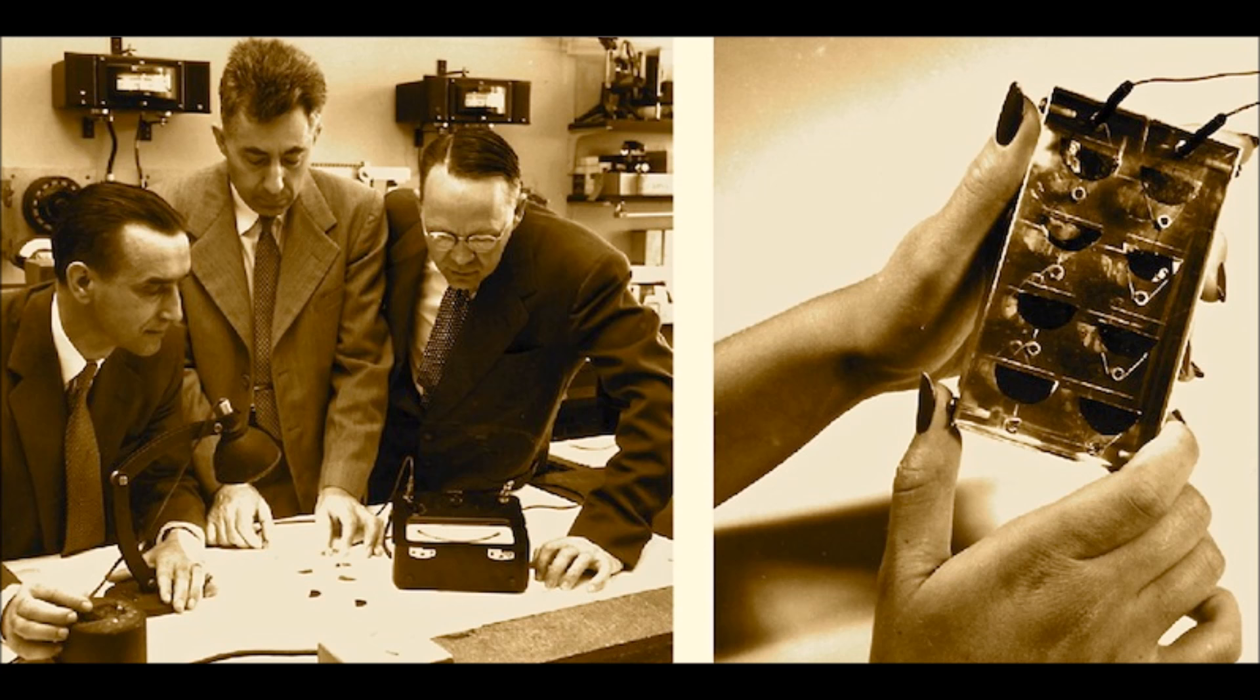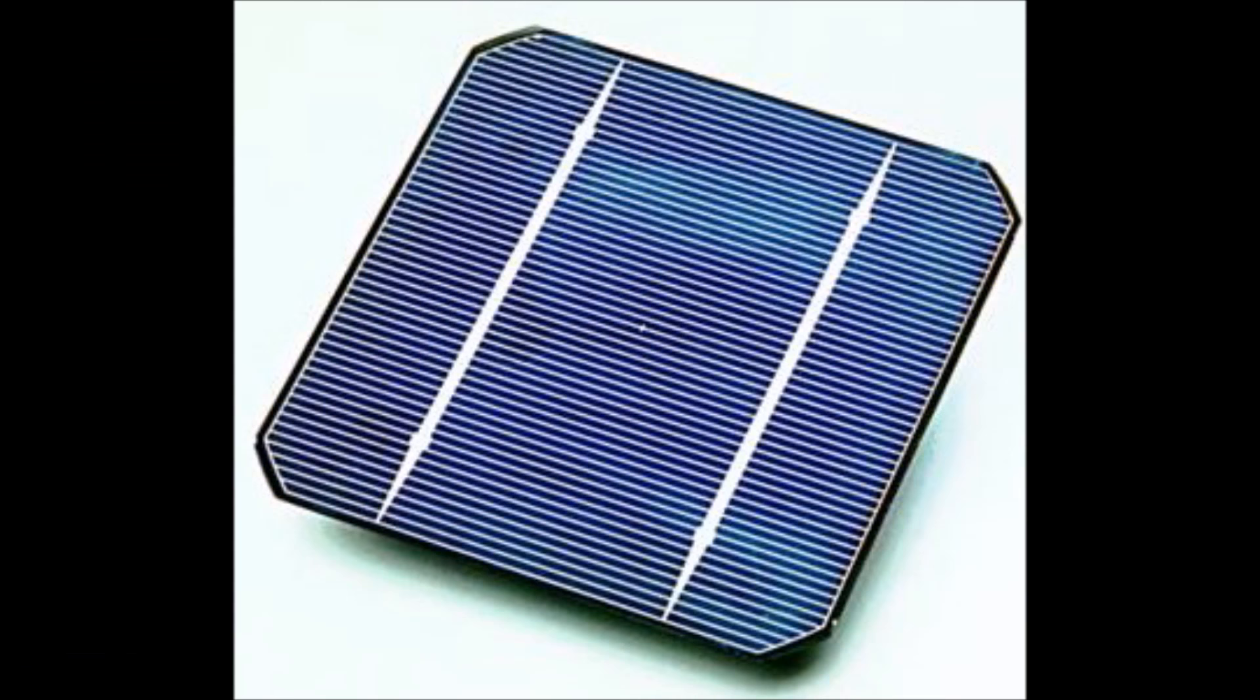The first solar cells were developed in the late 1800s, but then in the 1950s, Bell Labs created the first photovoltaic cells using silicon.